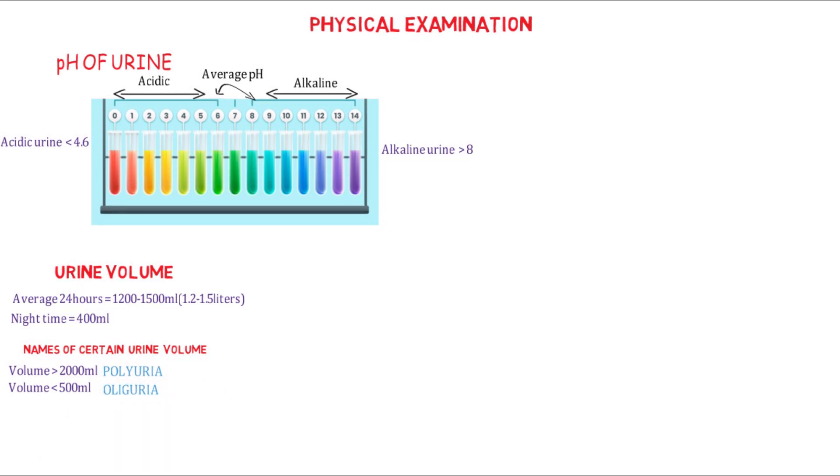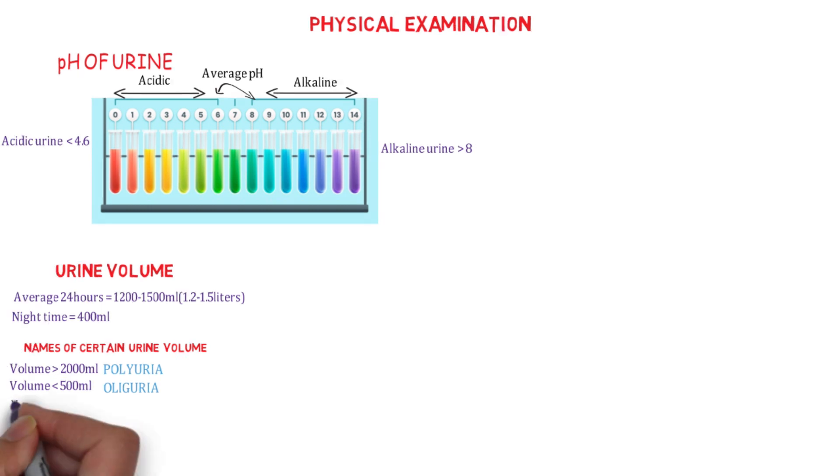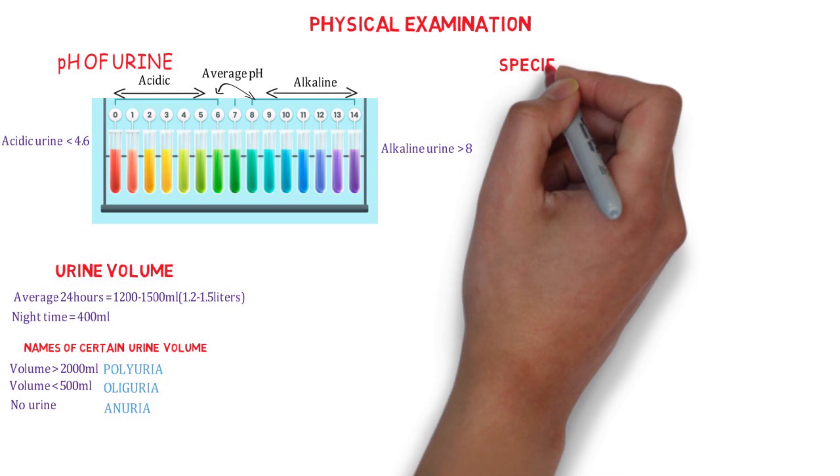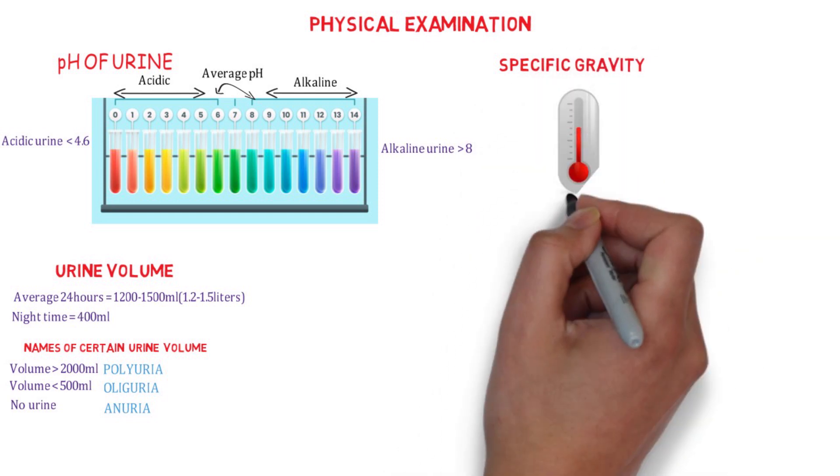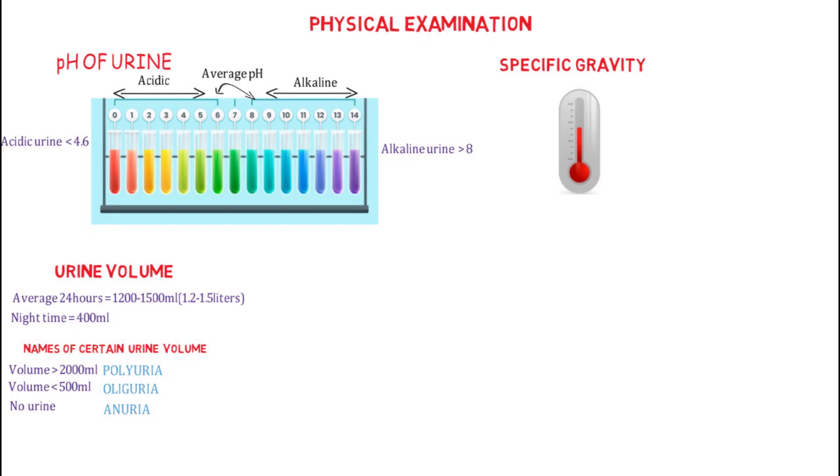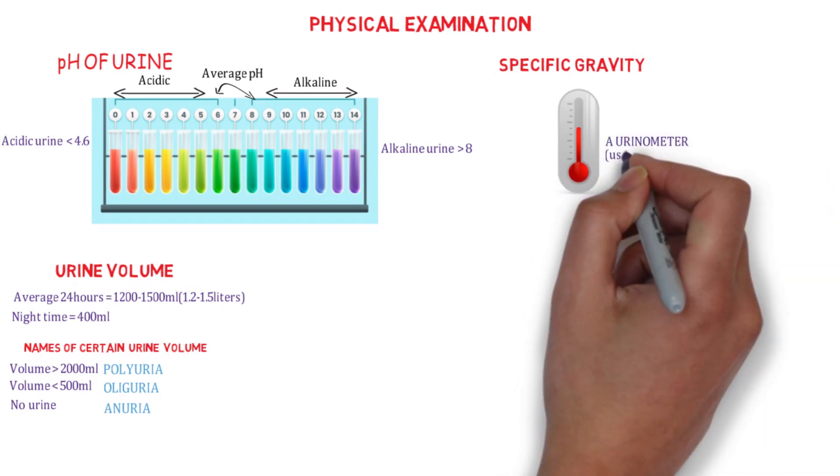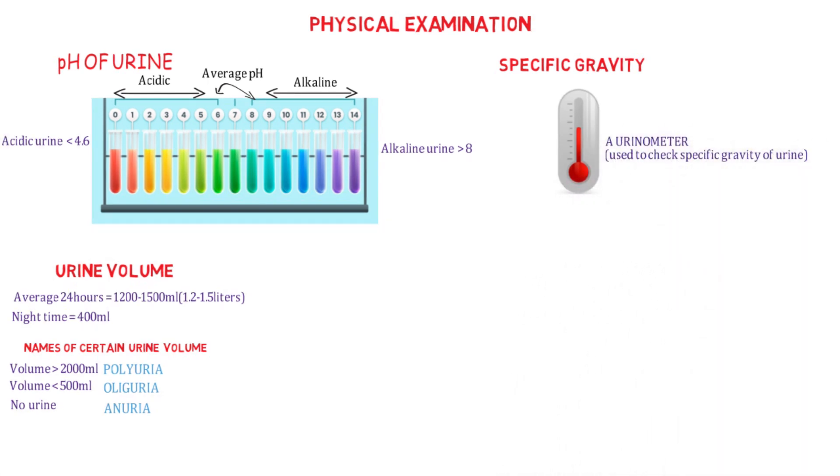While a complete absence, that's when there is totally no urine formation in the body, is anuria. Lastly, we will see specific gravity as a parameter for physical examination in urinalysis, and there is an instrument called urinometer that is used to check the specific gravity of urine.